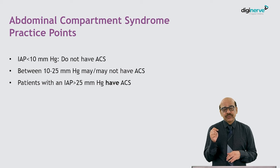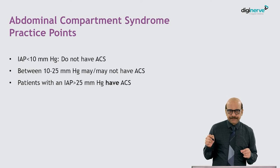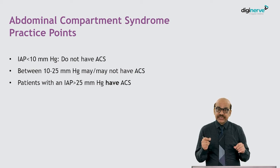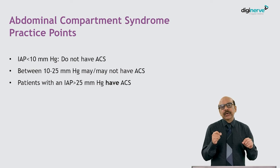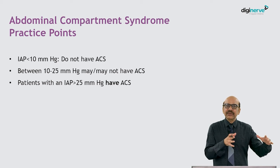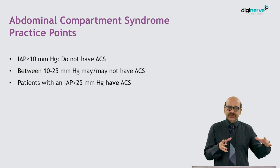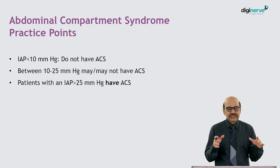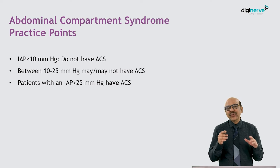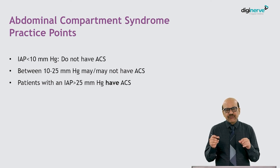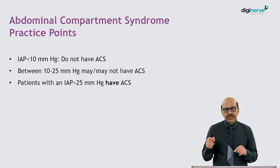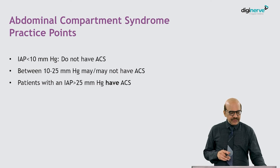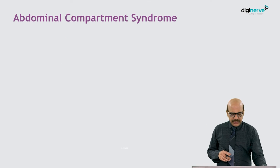What defines abdominal compartment syndrome is organ dysfunction. At times this can occur in individuals with a pressure as low as 10 mmHg — in those who are very susceptible or sensitive. However, a full-blown abdominal compartment syndrome is very commonly seen in those with a pressure of 20 to 25 mmHg and above.